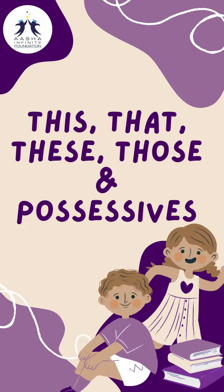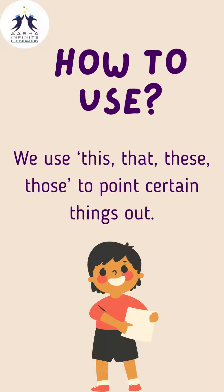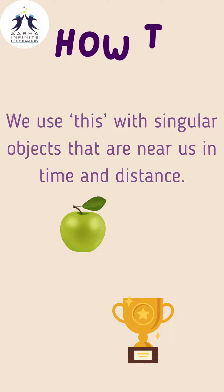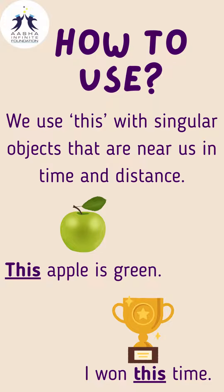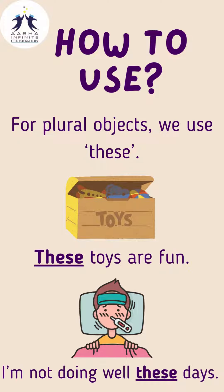This, that, these, those, and the possessives. We use this, that, these, and those to point certain things out. We use 'this' with singular objects that are near us in time and distance. For example: 'This apple is green.' For plural objects near us, we use 'these'. For example: 'These toys are fun. I'm not doing well these days.'